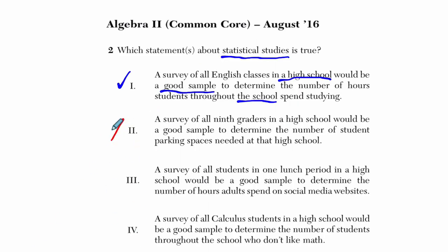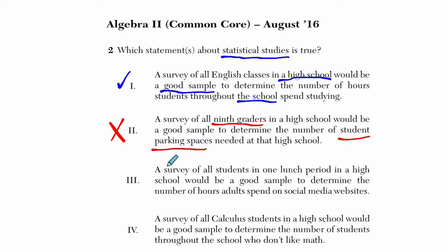The second one says a survey of all ninth graders in a high school would be a good sample to determine the number of student parking spaces needed at that high school. When evaluating a survey, ask yourself: would the respondents actually be able to answer what you're asking? Most ninth graders are not involved in driving, so that wouldn't make sense. Student parking spaces are mostly reserved for seniors. Even though it's all ninth graders and a large group — about a fourth of the school — it's not random enough.